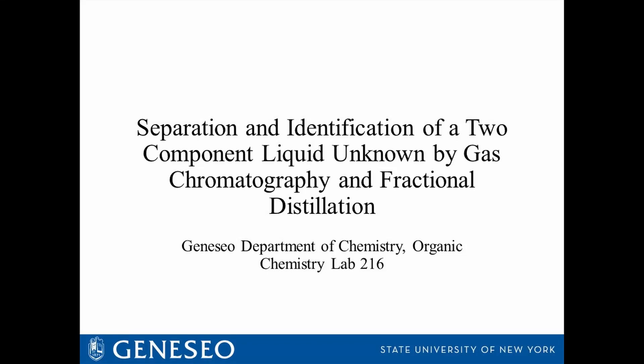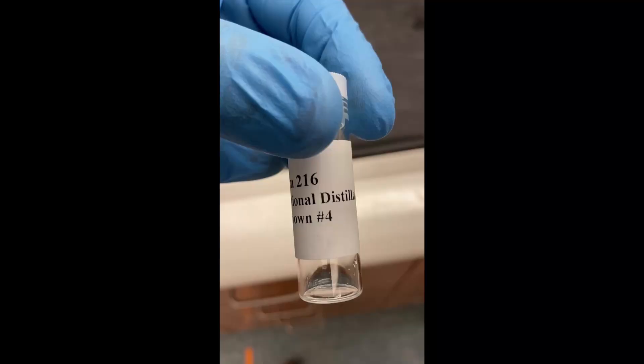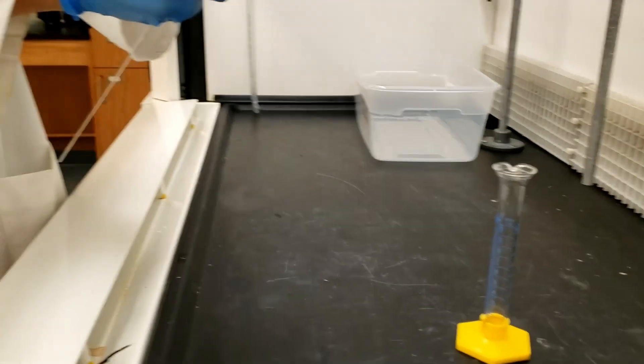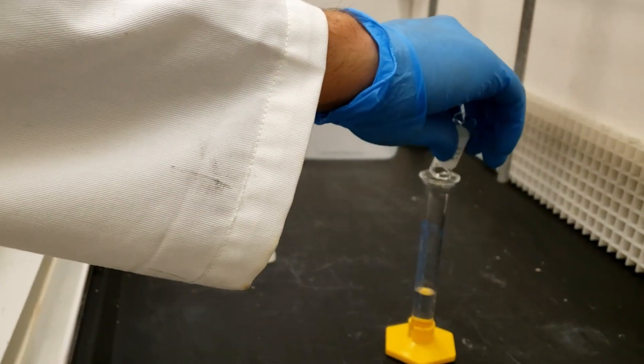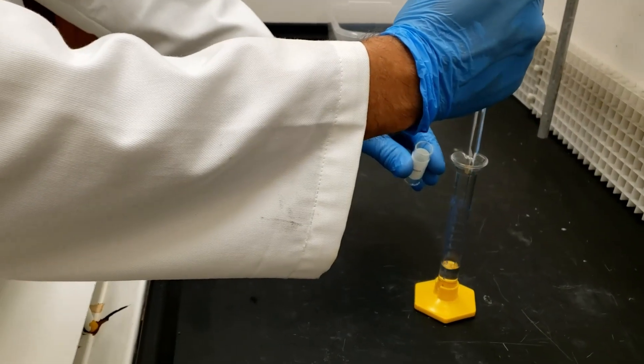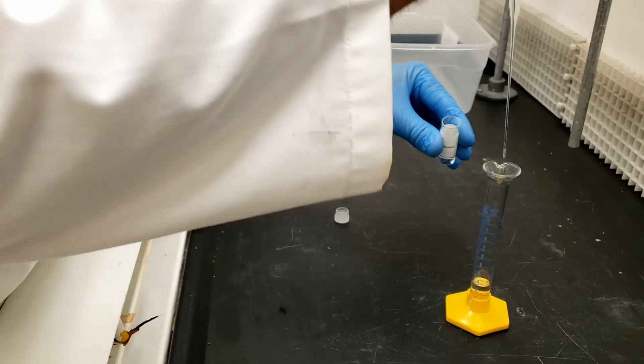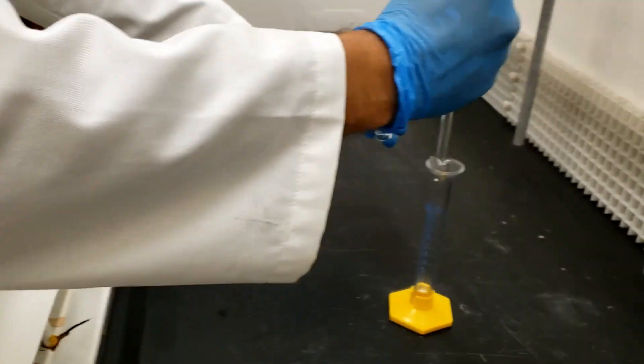Hello everyone and welcome to the virtual gas chromatography and fractional distillation lab. At the start of this lab you will receive an equimolar solution of two compounds. Make sure you write down the unknown number. Start by recording the initial volume of your unknown. You'll want to transfer your unknown back to the vial to prevent unnecessary evaporation. Make sure you cap it.